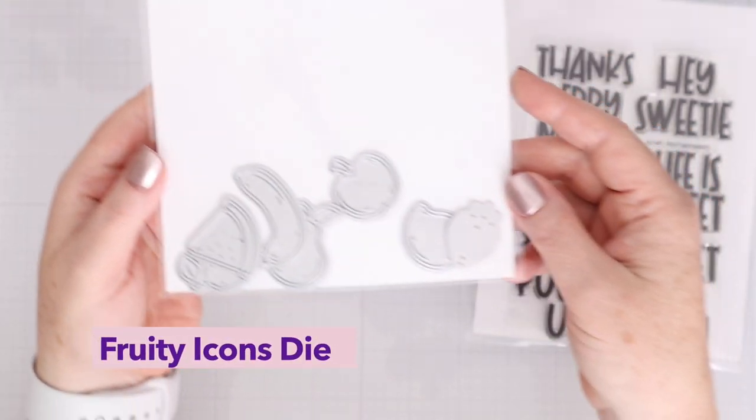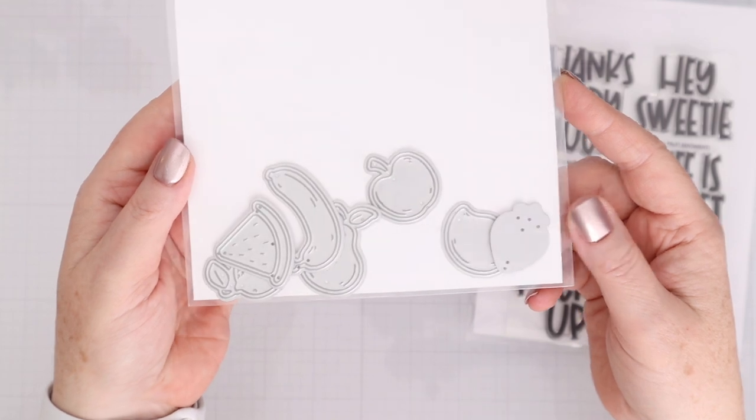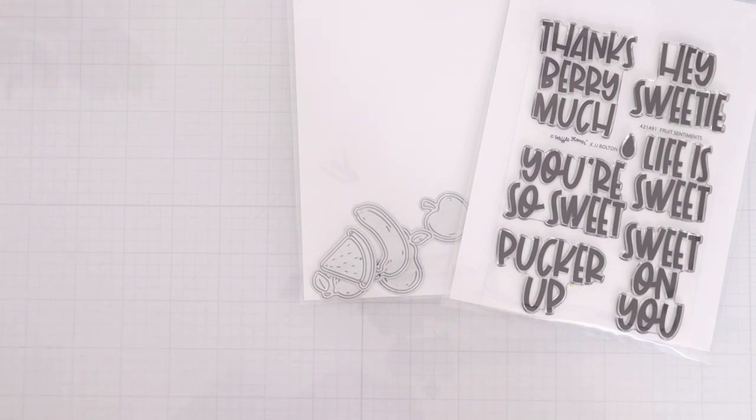These are the Fruity Icons die and each of these fruits has a little outline and then the fruit and some of them have little leaves. I love how the dies are all included. All the shapes for the fruit are included in one die each.